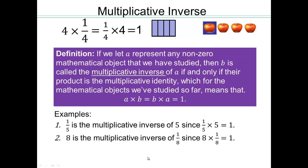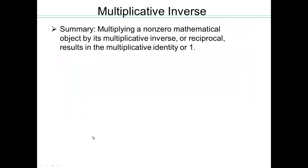8 is the multiplicative inverse of 1 eighth, since 8 times 1 eighth equals 1. See if you can verify why 8 times 1 eighth equals 1, or why a fifth times 5 equals 1. In summary, multiplying a non-zero mathematical object by its multiplicative inverse gives us 1.